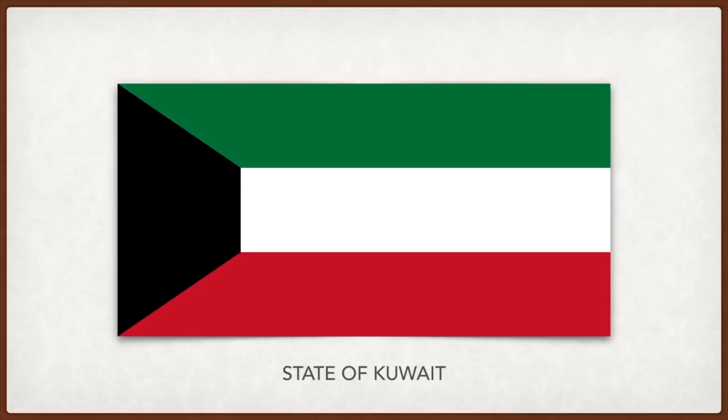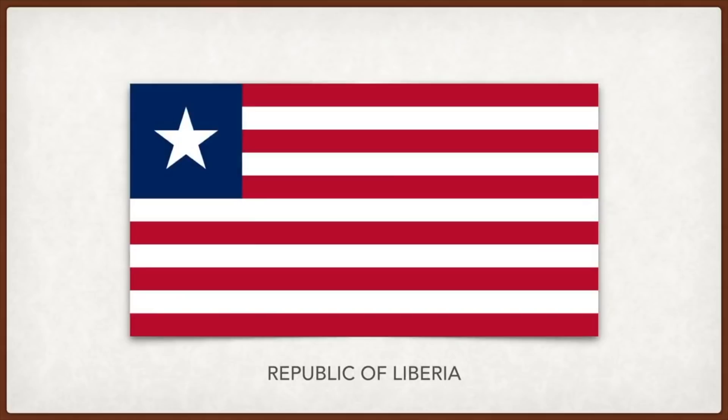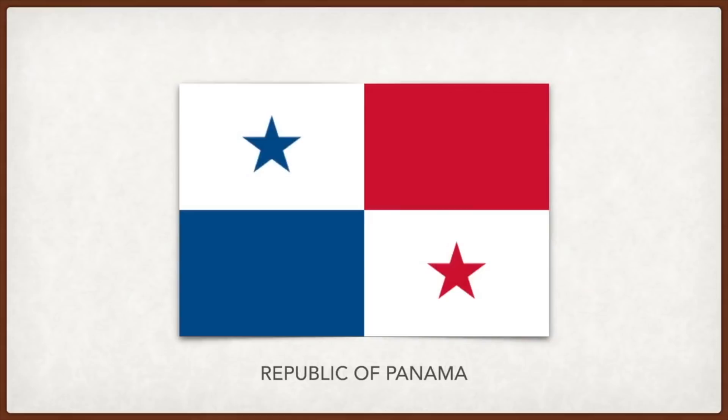Liberia: the US flag was the basis for this design; the number of stripes was reduced to 11 indicating the number of men who signed the Liberian Declaration of Independence. Panama: the colors symbolize the two major political parties — red for liberals and blue for conservatives, and white for peace between them, although the colors and stars hint at American influence.